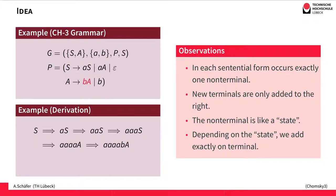It doesn't matter what kind of production we take — the non-terminal stays there. In each step we generate one terminal which we add to the sentential form on the right, and we continue until we use a production that replaces this rightmost non-terminal by one terminal or by the empty word. So this rightmost non-terminal in each sentential form is more or less a state — it determines what kind of productions we can use, and this looks very much like the behavior of a finite automaton.